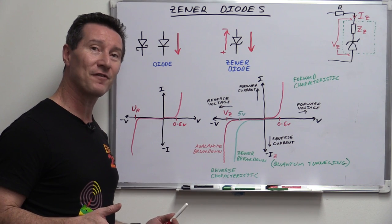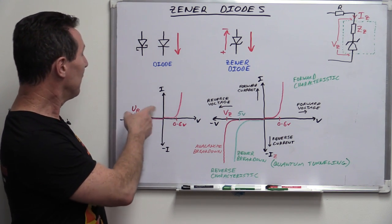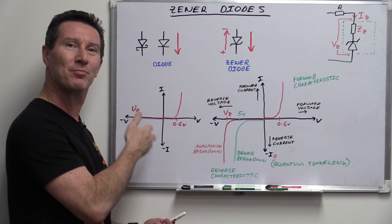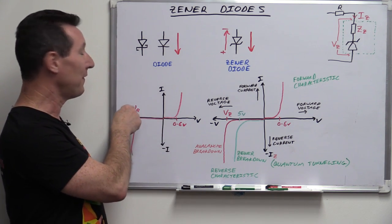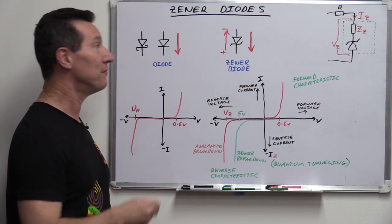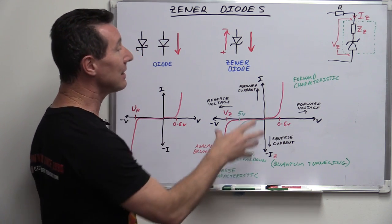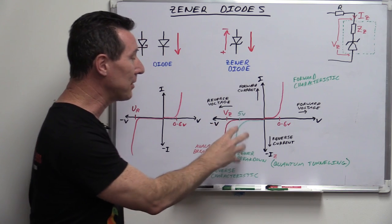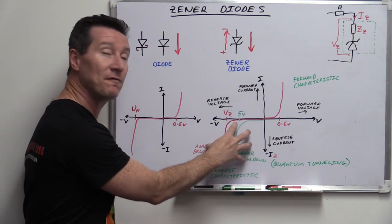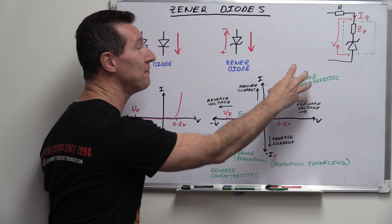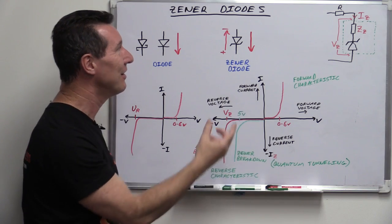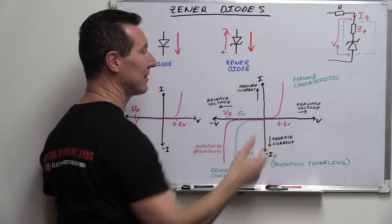Just to clarify the terminology: the reverse breakdown voltage — I put VB before because I was talking about breakdown — but on the datasheet you'll find it as VR for regular diodes, so just stick with VR. Now let's take a look at a typical implementation of a Zener diode, using the reverse characteristic, because if you use the forward characteristic, you might as well just use a regular diode.